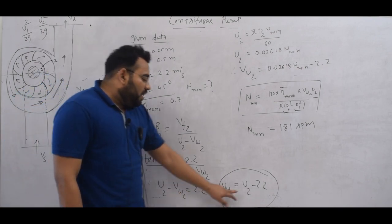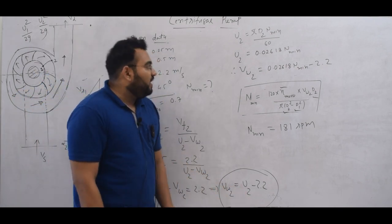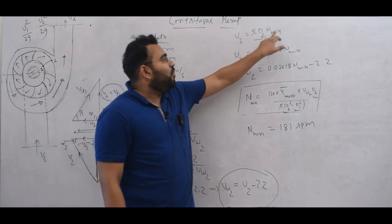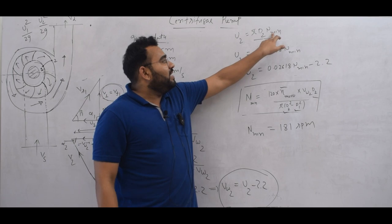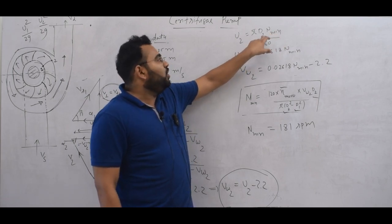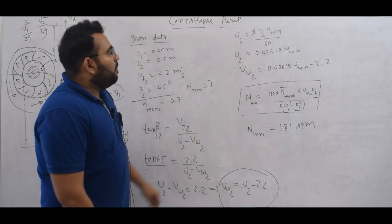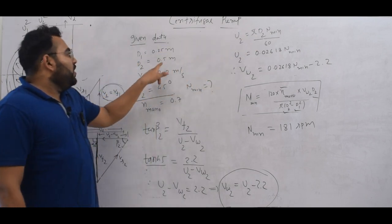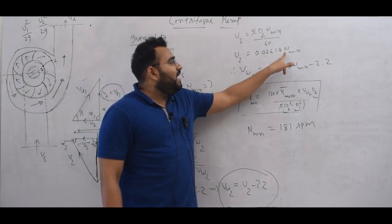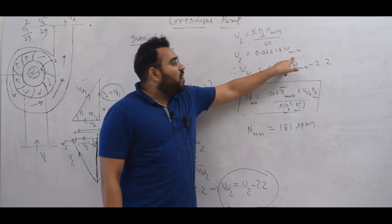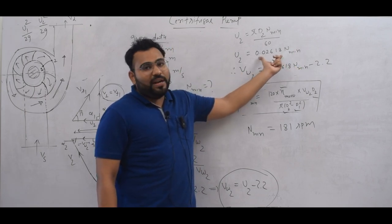Now VW2 is in the form of U2. So we find U2. U2 value is pi D2 N upon 60. Let's put N minimum here. So pi D2 N minimum upon 60. Now let's put D2 value 0.5. So U2 value is 0.02618 N minimum.